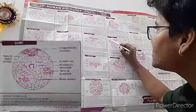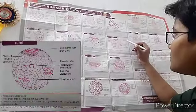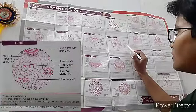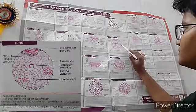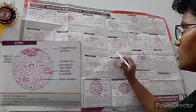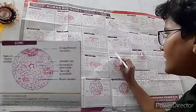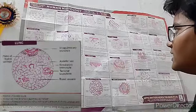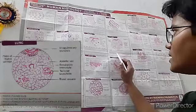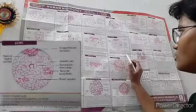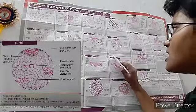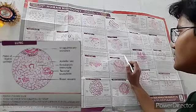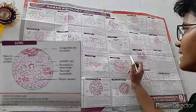Now the lung. Visible structures include plates of hyaline cartilage, intrapulmonary bronchus, alveolar sac, respiratory bronchioles, terminal bronchioles, and blood vessels. The lung shows alveolar ducts and alveolar sacs lined by simple squamous epithelium. The intrapulmonary bronchus contains a varying amount of hyaline cartilage and smooth muscle. Respiratory bronchioles are lined by simple cuboidal epithelium, lacking cilia and goblet cells.